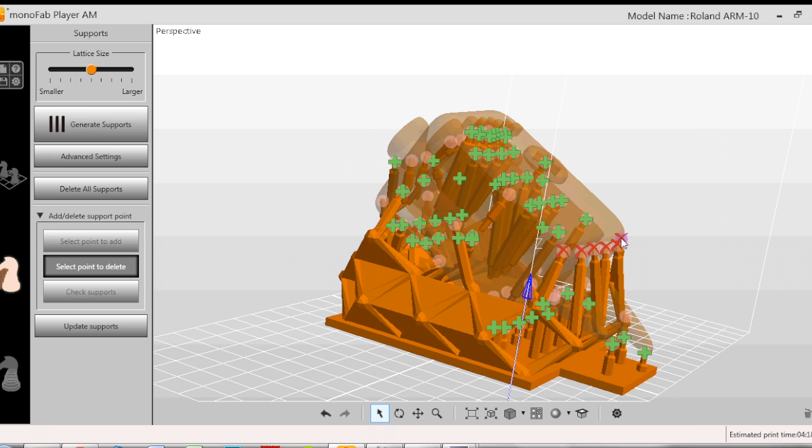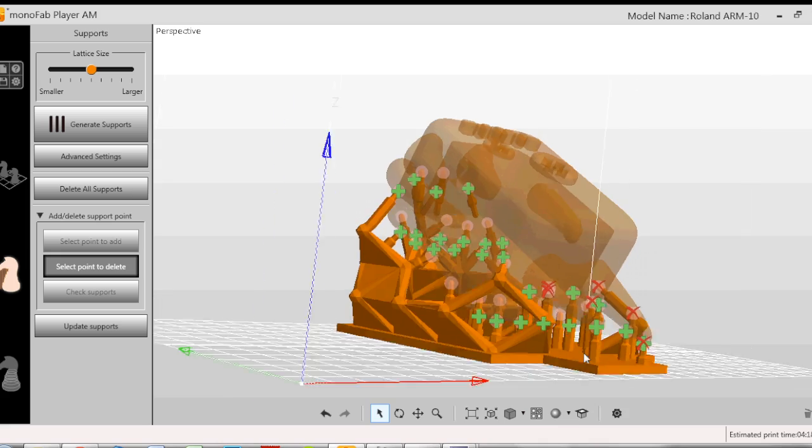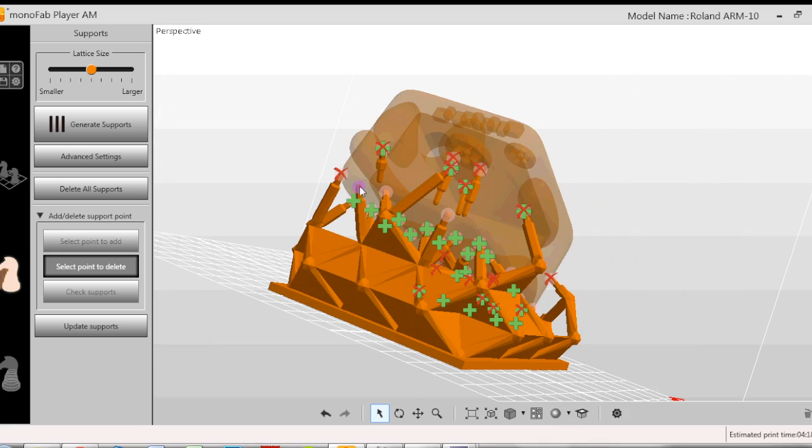Now I've generated the supports automatically but it seems to give me way too much. So I'm just going to go around deleting some of the supports and adding new ones where I think is necessary.